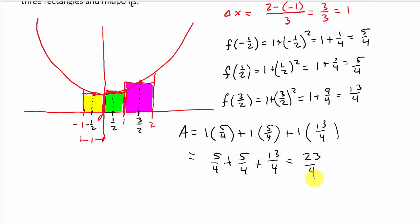So, 23 divided by 4, that is equal to 5.75. Or I guess you could leave it like that if you wanted. But that would be the area using midpoints. So I hope the video helped. Check out my other videos. Give me a like, share, and subscribe. And thanks for watching.